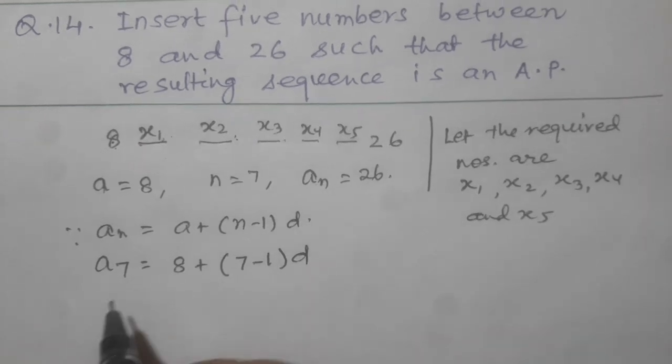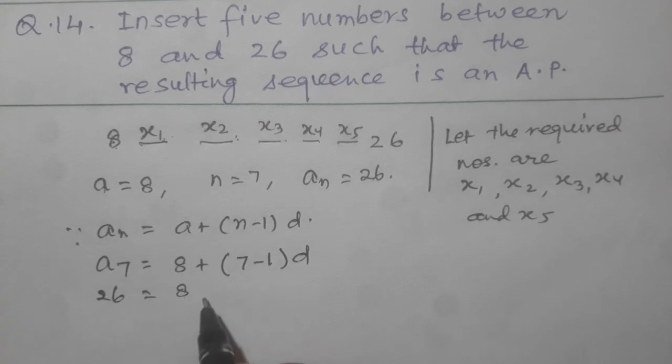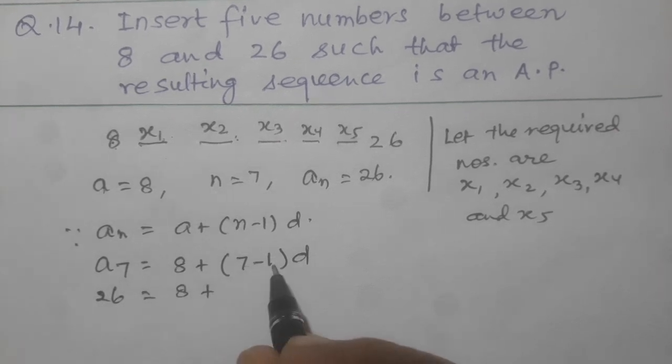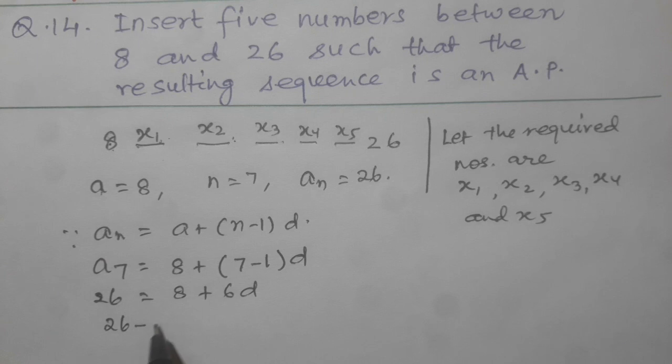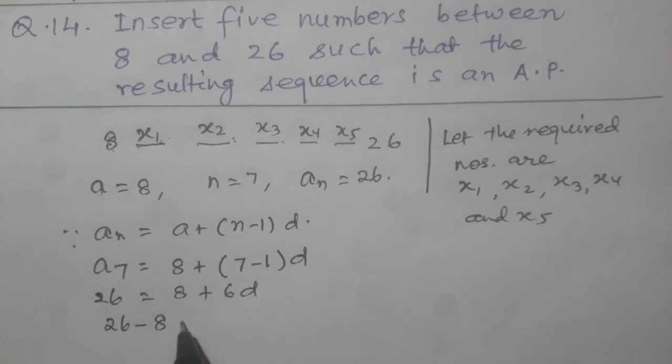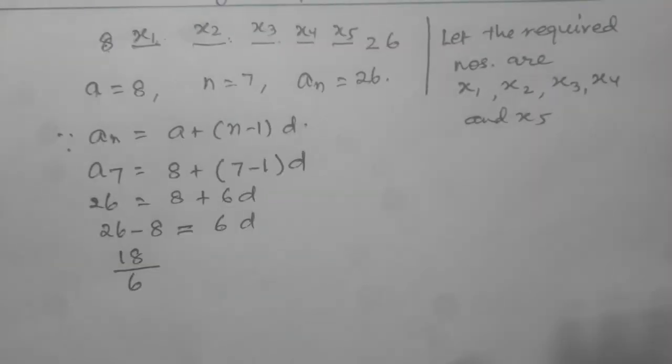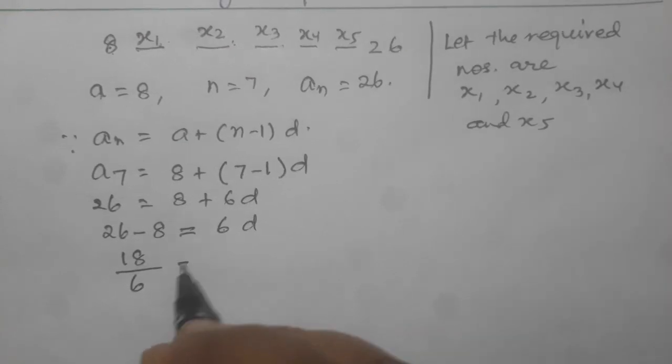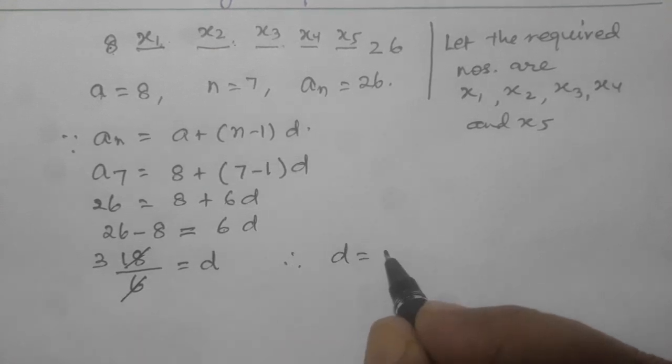A7 equal to An is equal to 26 equal to 8 plus 7 minus 1, that's 6, times d. So 26 minus 8, this 8 I have put this side, it is plus here so it is minus, equal to 6d. It is 18 and 6 is multiplying here so it will divide here. 18 by 6 will be d. This 3 times 6, 3 times 18, it will be 3. So d equal to 3.